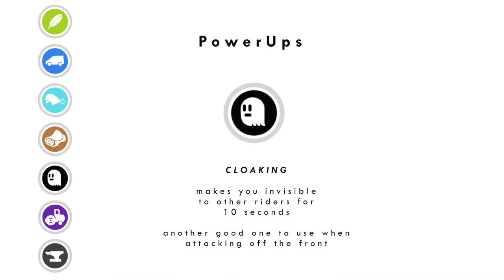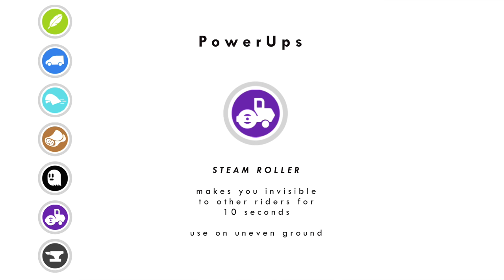Cloaking is the ghost icon — it makes you invisible to other riders for 10 seconds and is only available in an event. It's a sneaky one: push hard off the front and hopefully riders around you won't see that you've gone. The steamroller is the steamroller icon — it flattens any surface you're riding on to make it feel like smooth pavement. So if you're on a rickety bridge, dust, or dirt, pressing this will reduce your rolling resistance and make you go faster.